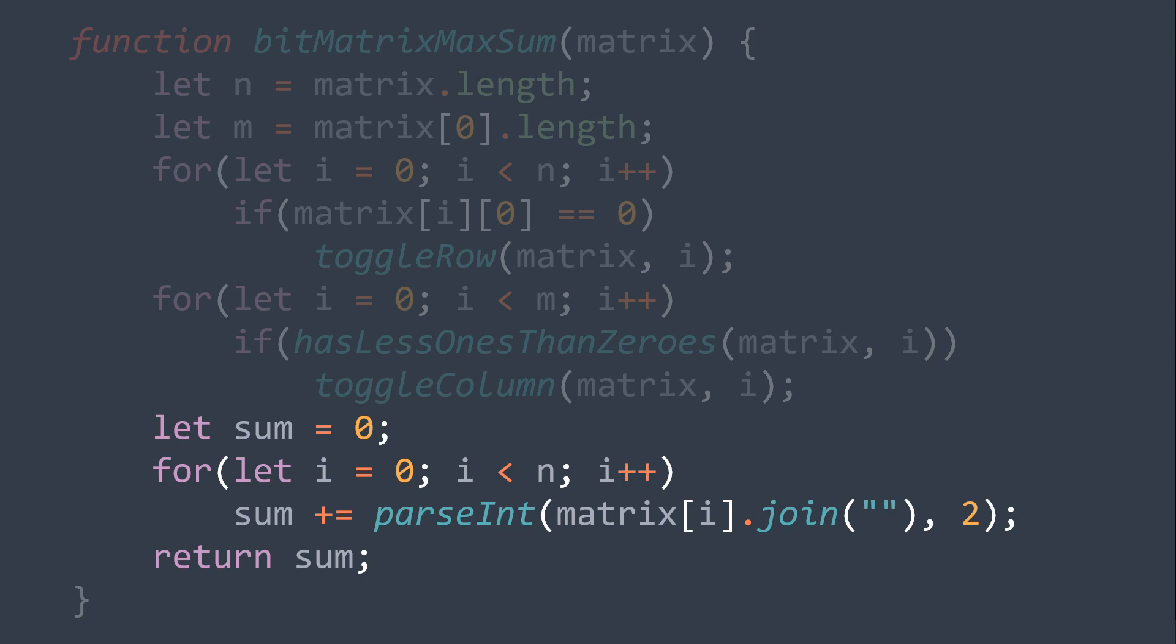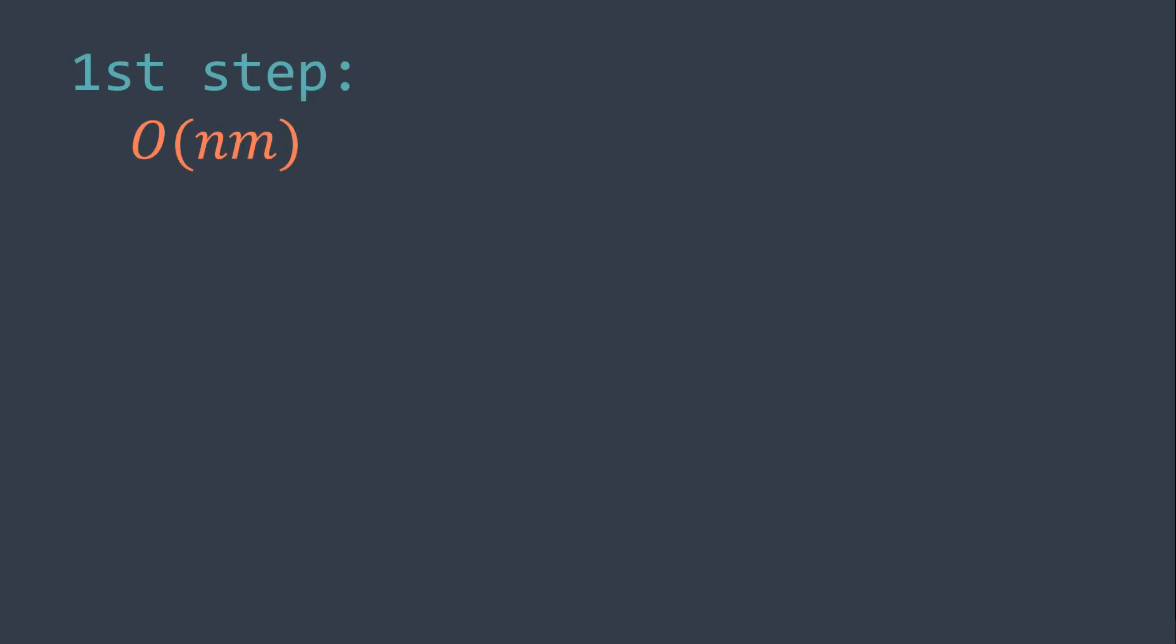For the time complexity of this solution, in the worst case, we have to toggle each row, and we have n rows, and each one of them has m elements. So the first step costs O of n times m. Second step, when we toggle the columns, we also have to traverse all the elements of each column, so it's also O of n times m.